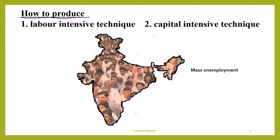The second basic problem is how to produce. In a centrally planned economy they use technology which is most suitable for the economy. There are two types of technique of production: labor intensive technique and capital intensive technique. If it is a labor-rich country facing mass unemployment, labor intensive technology is preferred over capital intensive technology, so that they can generate more employment opportunities and thereby reduce unemployment and poverty.